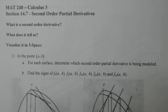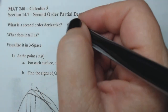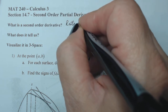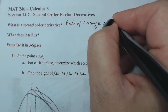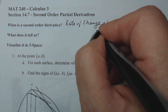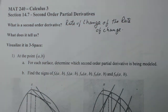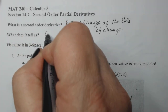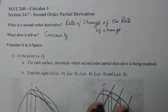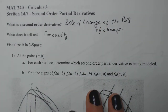Section 14.7 is about second-order partial derivatives. A second-order derivative is the rate of change of the rate of change. We call it the second derivative in Calc 1 and here we call it the second-order partial derivative. The first derivative tells us whether a function is increasing or decreasing. The second derivative tells us about concavity — and that's the same here, except we have concavity in two directions: the x direction and the y direction.